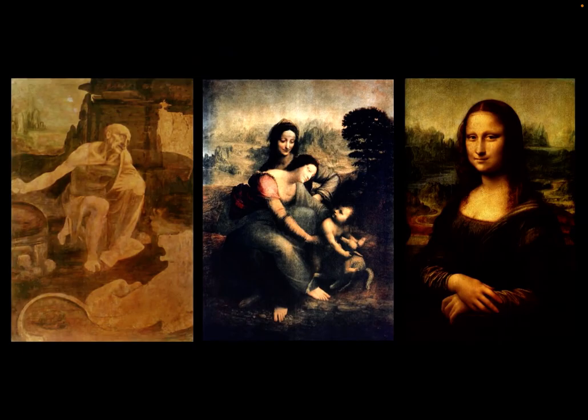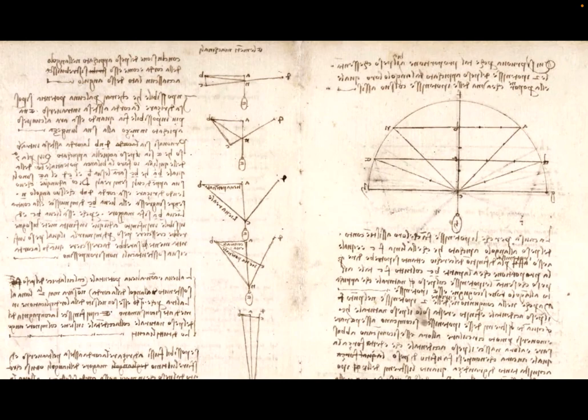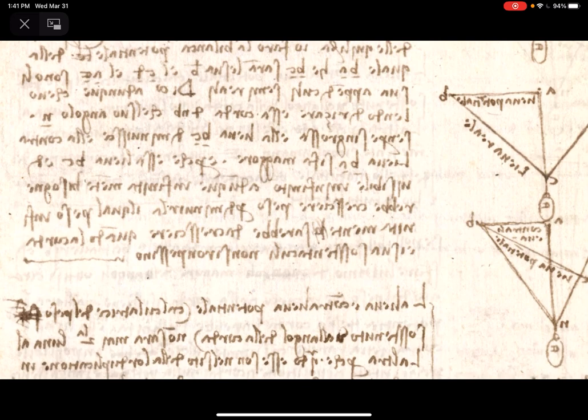During his 17 years in Milan, da Vinci finished only six paintings. Instead, he focused on various scientific studies. Da Vinci said, 'learning never exhausts the mind.' He kept track of his ideas with meticulous illustrations and entries in a series of notebooks. One interesting thing about da Vinci is that he wrote backwards — in mirror script. In order to understand what he wrote, you have to put a mirror in front of it and read the reflection. His writing is in Italian.